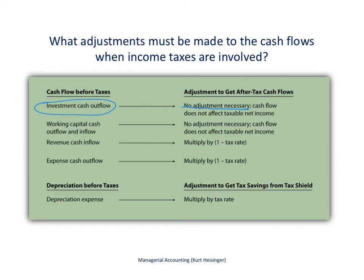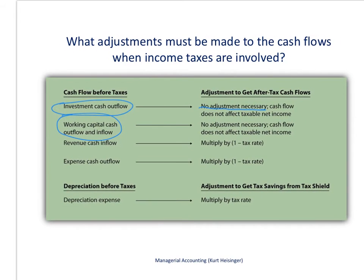The second cash flow is working capital, defined as current assets minus current liabilities. Examples include the cash provided to open a retail store — cash on hand and cash to stock inventory. Perhaps that retail store will send that cash back over several years, which is the cash inflow associated with that working capital. No adjustment is necessary for working capital cash flows.